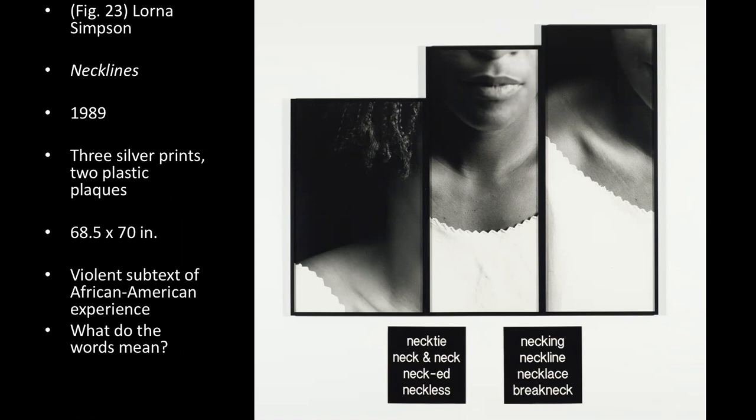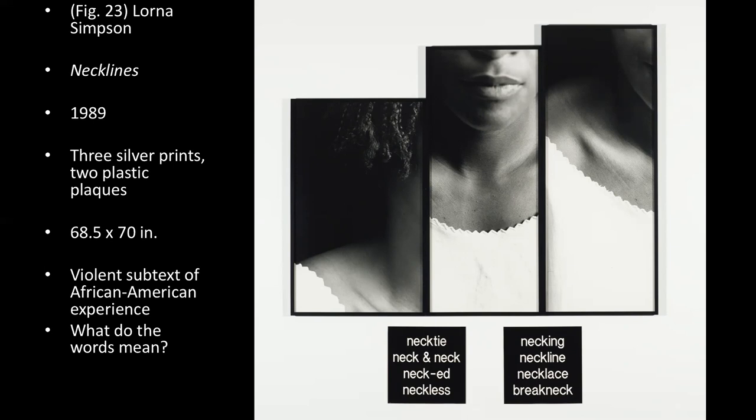One of the books I used to teach from in an art appreciation class talked about the violent subtext of the African American experience in relationship to this word work. Take a look at the imagery and then at the words, and think about the multiple meanings of the words. See if you agree that it fits with the violent subtext of African American experience — but also try to look at things that have to do with modern things that people have to deal with, not just Black people but others as well. This piece is from 1989, so you might want to look up some of the words since it may refer to slang you don't necessarily know the meaning of.